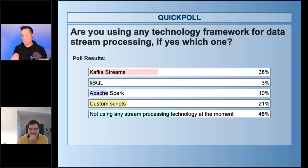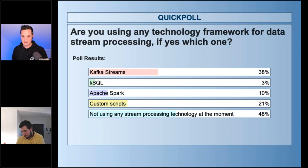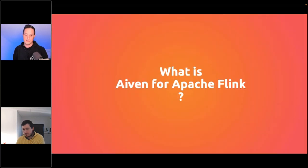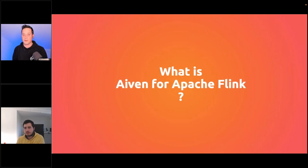Now, moving to more Aiven-related topics: what is Aiven for Apache Flink and how is it different from standard Apache Flink itself?